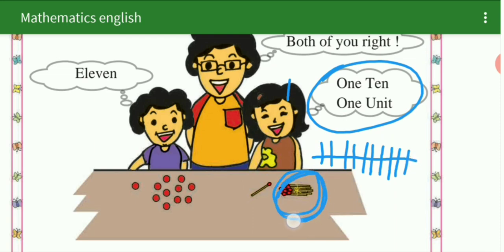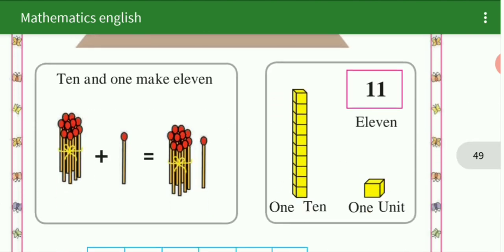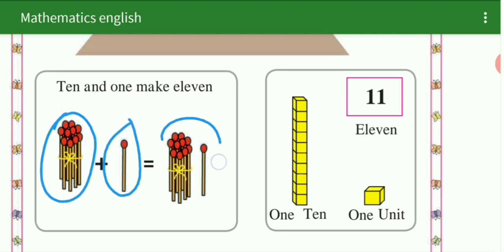इसे हम क्या कहते हैं? One tenth. Ten unit हैं इसमें, और one tenth और one unit — single है. One tenth और one unit — यह कितने हैं? 11. You both are right. आप दोनों भी सही हैं. 10 and one make 11. 10 plus one is equal to 11.